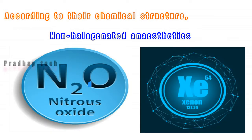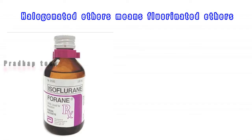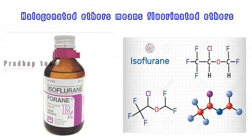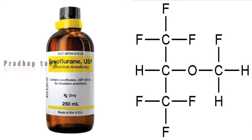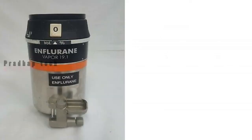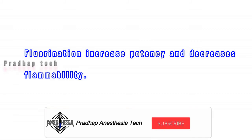Next, classification of inhalation anesthesia. According to their chemical structure, it is classified into three groups. First, non-halogenated anesthetics: nitrous oxide and xenon. Second, halogenated alkanes: halothane. Third, halogenated ethers, which means fluorinated ethers: isoflurane, desflurane, sevoflurane, and enflurane. Note: fluorination increases potency and decreases flammability.